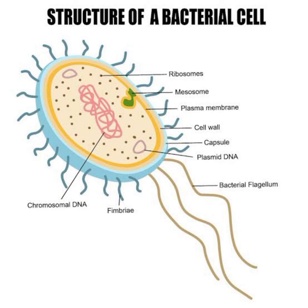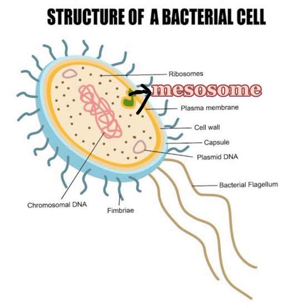Bacteria have foldings inside the cell membrane known as the mesosome. The mesosome is involved in replication, respiration, and cell division, including the separation of chromosomes during cell division. It performs the role of Golgi bodies and mitochondria in the bacterial cell.